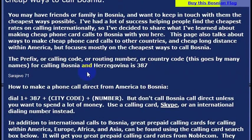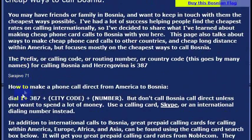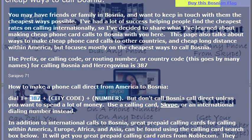If you want to call to Bosnia, you would actually need to dial the country code. You would dial 011, which is the international dialing code, and then you would dial the country code for Bosnia, which is 387.